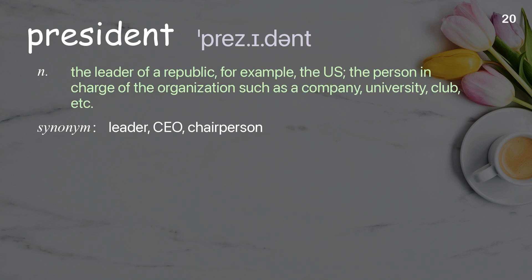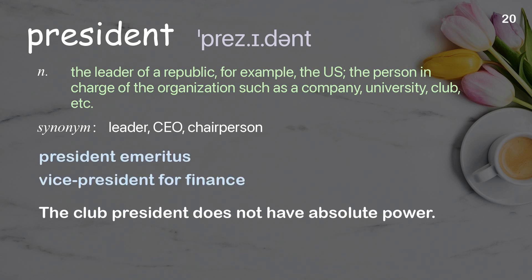President: The leader of a republic; the person in charge of an organization, such as a company, university, club, etc. Examples: President emeritus. Vice president for finance. The club president does not have absolute power.